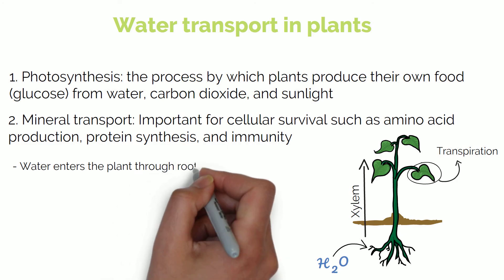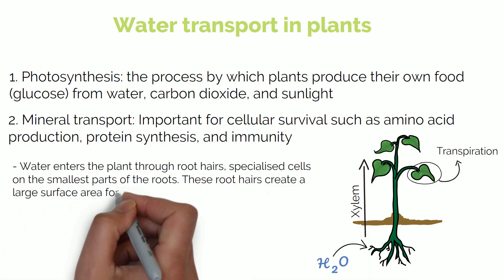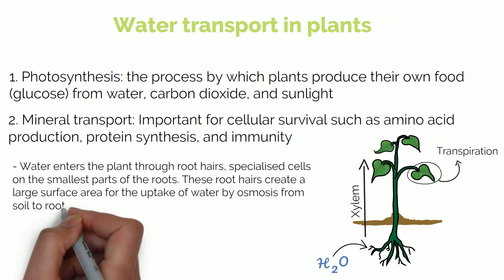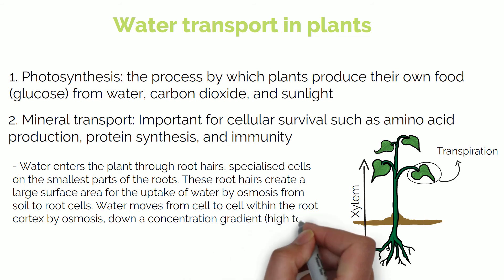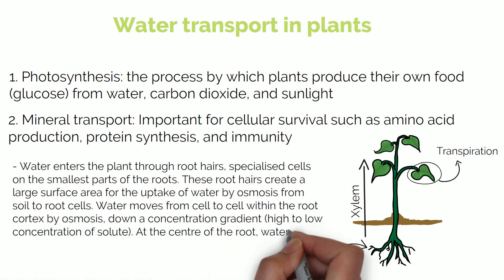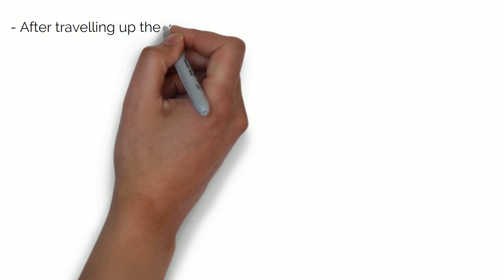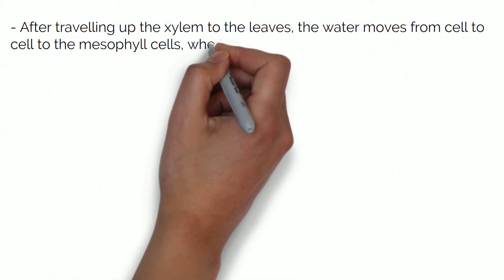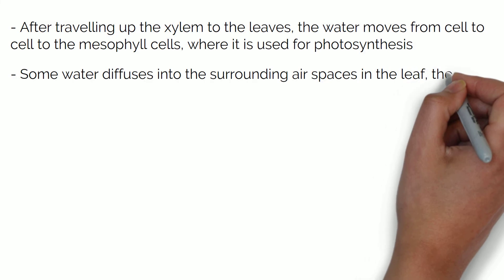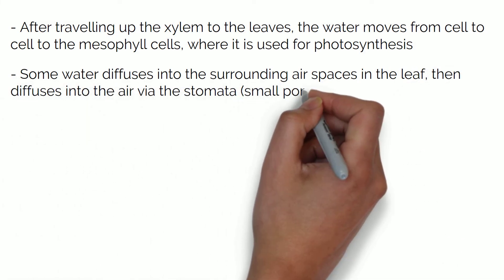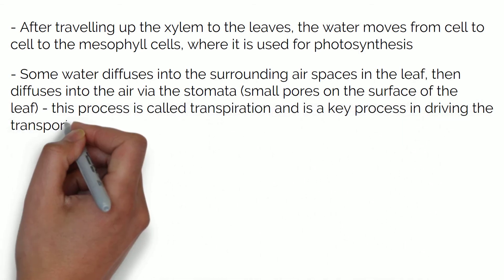Water enters the plant through root hairs, which are specialised cells on the smallest parts of the roots. These root hairs create a large surface area for the uptake of water by osmosis from soil to root cells. Water moves from cell to cell within the root cortex by osmosis down a concentration gradient, from high to low concentration. At the centre of the root, water enters the xylem vessels. After travelling up the xylem to the leaves, the water moves from cell to cell to the mesophyll cells where it is used for photosynthesis. Some water diffuses into surrounding air spaces in the leaf then diffuses into the air via the stomata, which are small pores on the surface of the leaf. This process is called transpiration and is a key process in driving the transport of water through the xylem.